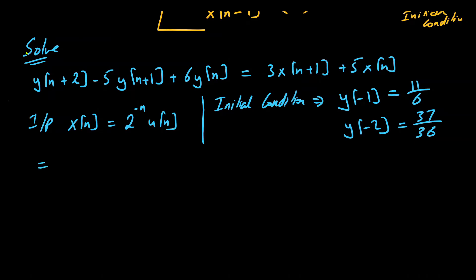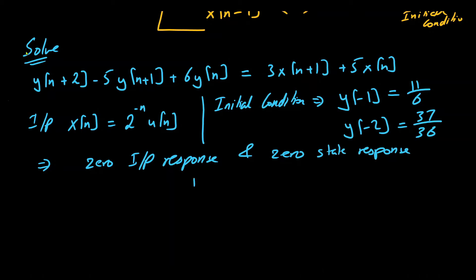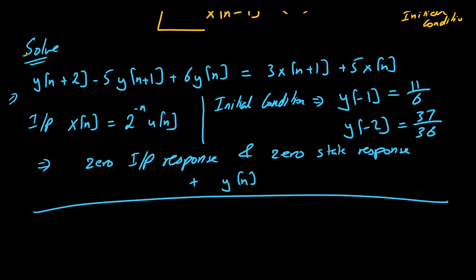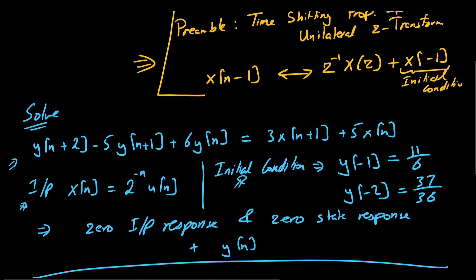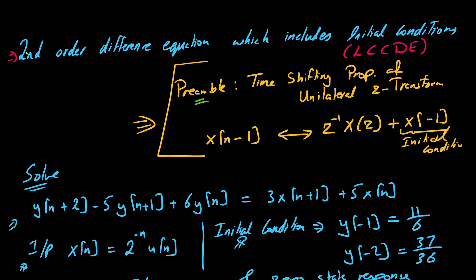We need to determine the zero-input response and zero-state response of this system, as well as the total response Y of N. Since this is a linear constant coefficient difference equation in terms of a linear time-invariant system, and our equation is currently in the form of time advance, we will convert it to time delay form.